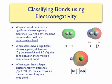We can use electronegativity to predict whether a bond between two atoms will be purely covalent, polar covalent, or ionic, by using these general guidelines based on the electronegativity difference.